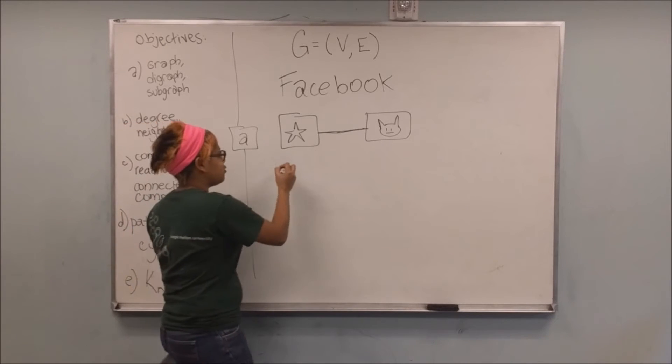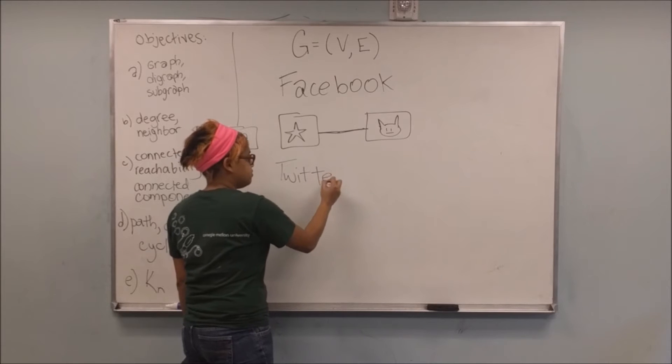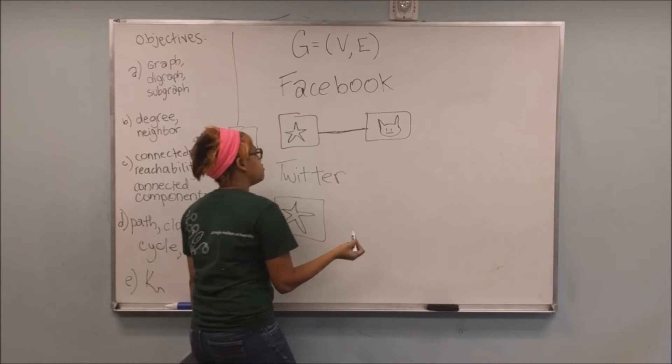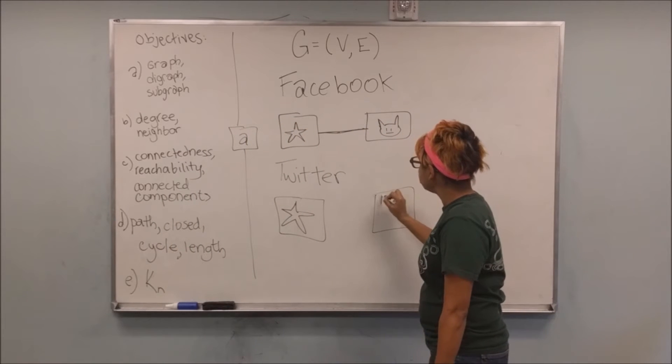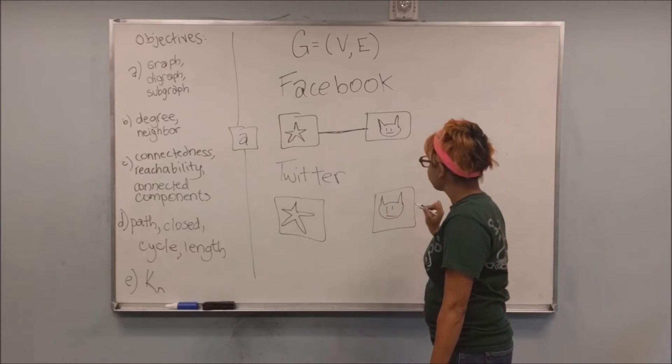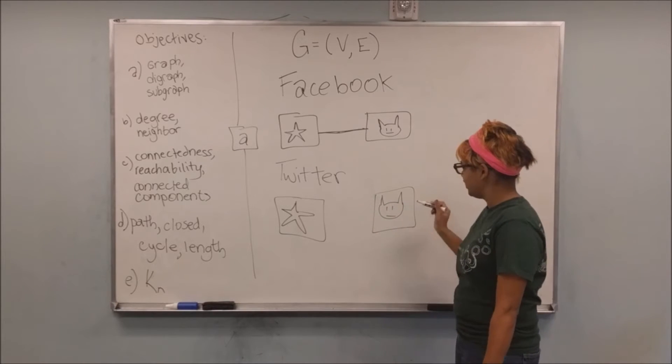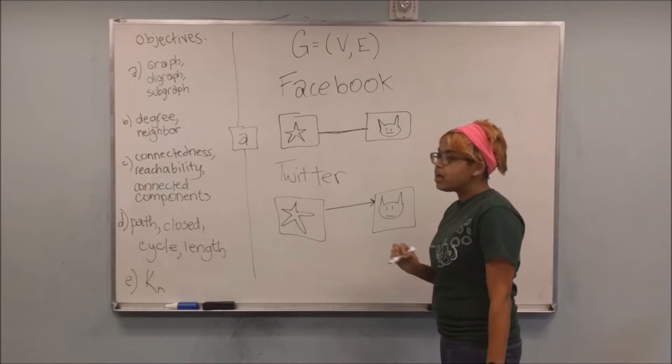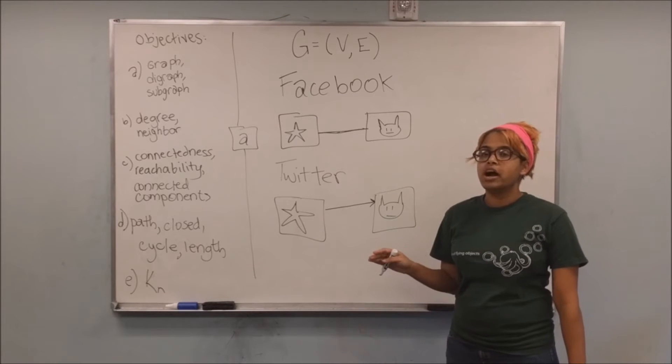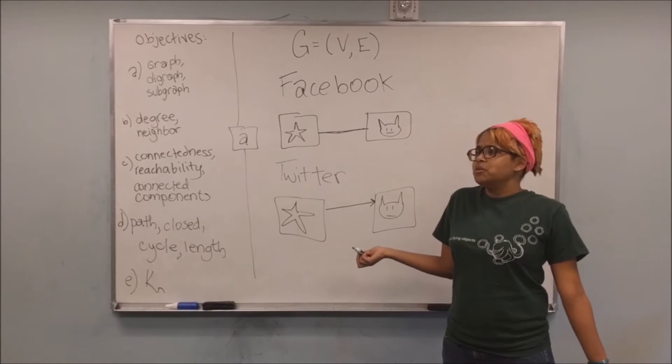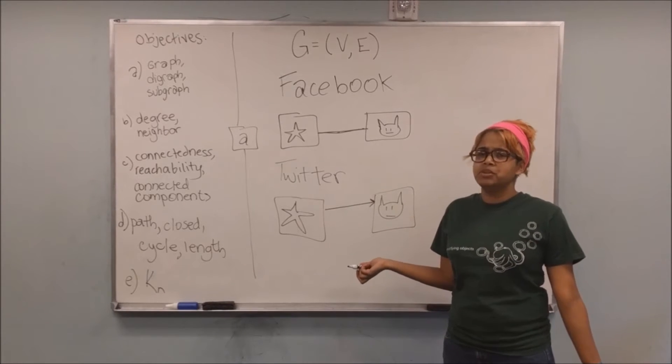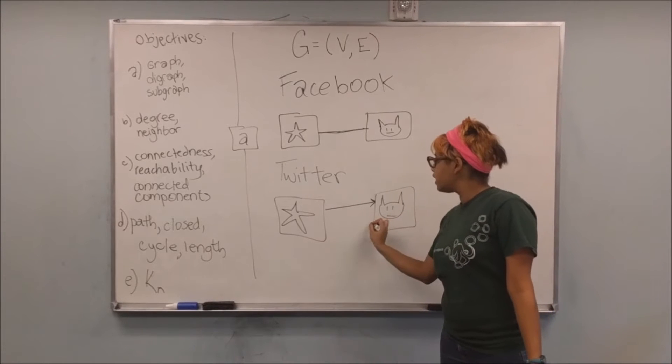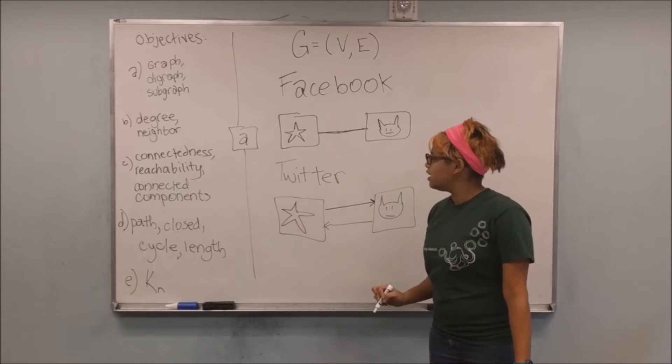On the other hand, on Twitter, it's a little bit different in that you don't make a friend request, you just start following someone. And so what I can do on Twitter is I can just start following someone. That person does not even have to know I exist. Taylor Swift has, I don't know, something like 65.3 million followers. She probably doesn't know most of them. And kitten cat can follow me back if he wants to, but it really doesn't matter.